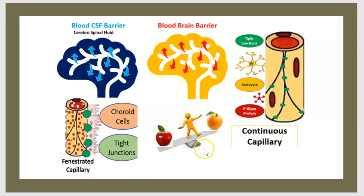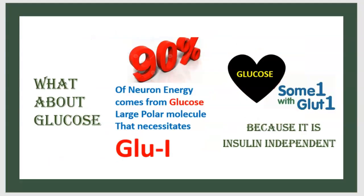To compare: in the blood-brain barrier, capillaries are continuous without fenestration; in the blood-CSF barrier, capillaries are fenestrated. Regarding glucose: 90% of neuron energy comes from glucose. Glucose is a large polar molecule that requires the GLUT1 transporter because it is insulin-independent.